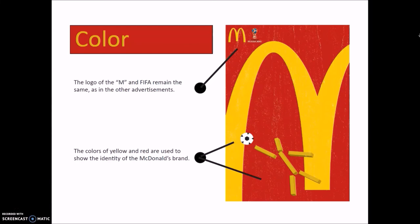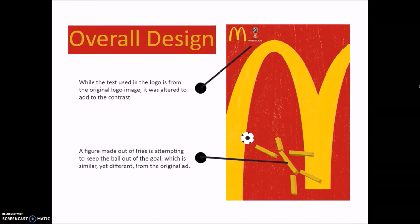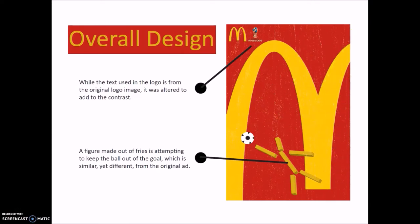In addition, the colors of red and yellow are iconic for McDonald's. As for the overall design, I altered the FIFA World Cup Russia 2018 logo to have some black letters, as seen here, instead of all white, to add to the contrast. I also added a custom background texture, here and here and over here, by photographing a wood slat in the backyard.